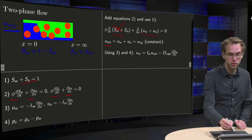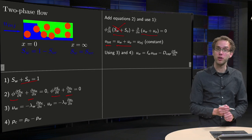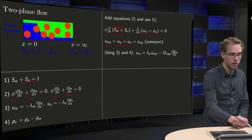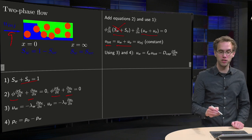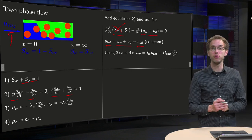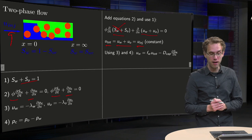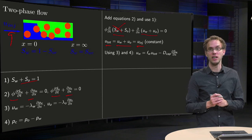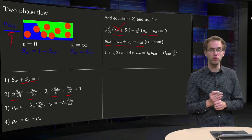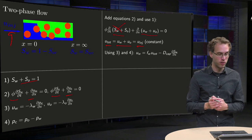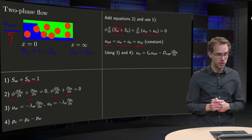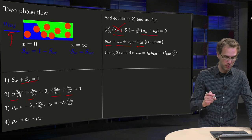Your total velocity, water plus oil, is constant. We know it equals the injection velocity at the boundary, so it must equal the injection velocity everywhere. That's nice - we already know our total velocity, which means we know our velocities in terms of saturations.